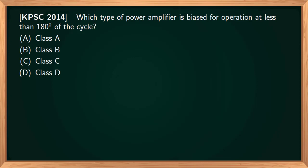Next question: which type of power amplifier is biased for operating at less than 180 degrees of cycle? Options are: Option A, Class A amplifier; Option B, Class B; Option C, Class C; Option D, Class D. Class A amplifier is working in full cycle of input signal, so it is working in 360 degrees of the cycle.